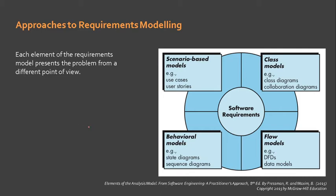There are several approaches to requirements modeling. Each approach attempts to represent an aspect of the software system that needs to be developed. The approach that analysts need to follow is dependent on both the technology resources available and the process model that they follow. Recall that for extreme programming, the object-oriented programming paradigm or OOP paradigm is recommended. This means that the analysis tools to use should complement the OOP approach.